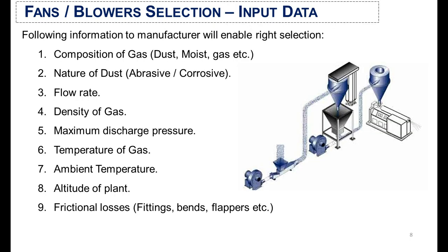The following information is required as input data for the selection of the right type of fan or blower. First, you need to know the composition of the gas being handled — whether it contains dust, moisture, or what type of gas it is, such as ammonia, simple air, or a combination of ammonia or nitrogen. Second is the nature of the dust — whether it is abrasive, inclusive, fertilizer dust, or simple solid material. Third is the flow rate of the gas.